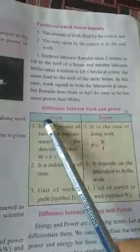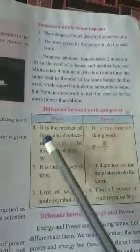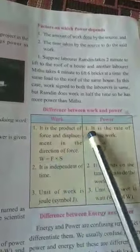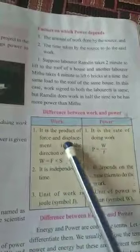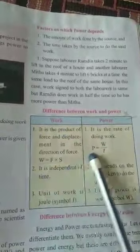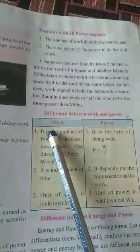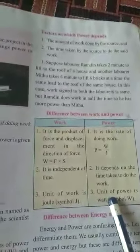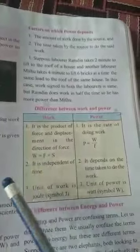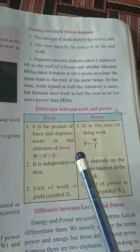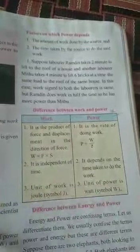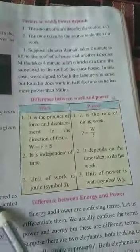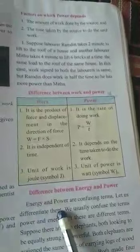Next is regarding differentiate between work and power. You know that work is the product of force and displacement, whereas power is the rate of doing work. Work is not dependent on time. Power depends on time. And work unit is joule, whereas power unit is watt. It means joule per second is also called watt. It is named after the scientist's name, James Prescott Watt, for giving them honor.